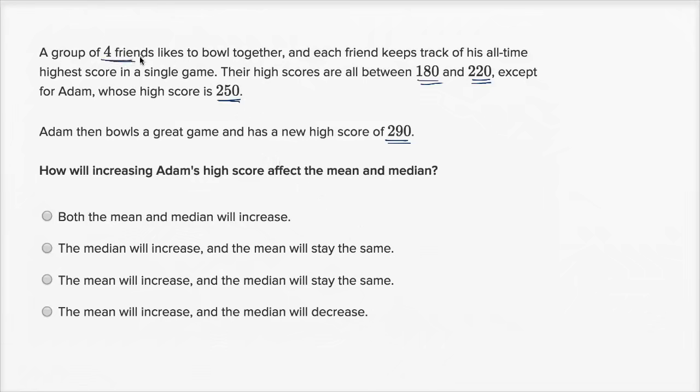We have four friends, and they each keep track of their all-time high score. So we're gonna have four data points. This is the lowest score of the friends, this is the second lowest, second to highest, and this is the highest scoring of the friends. Their high scores are all between 180 and 220, except for Adam, whose high score is 250. So before Adam bowls this super awesome game, the scores look something like this. The lowest score is 180. Adam scores 250. And if you take Adam out of the picture, the high score is 220. And we actually don't know what this score right over there is.